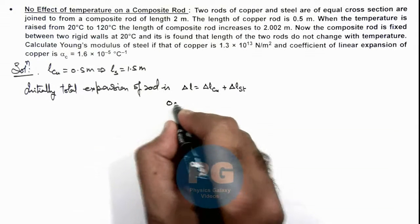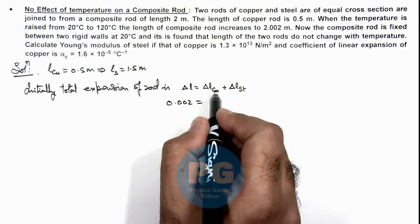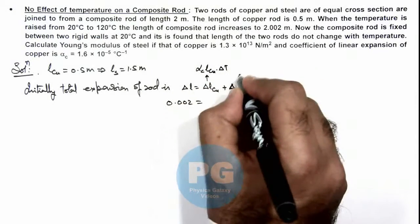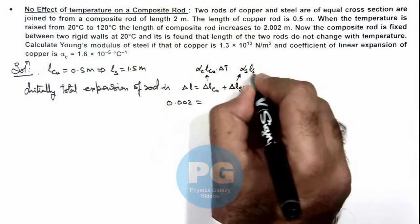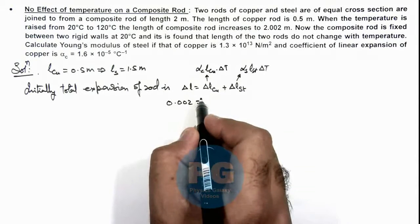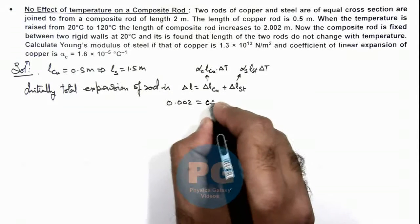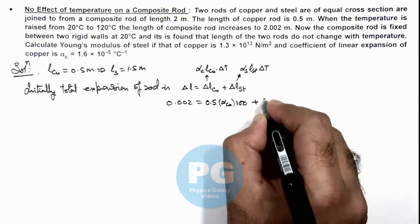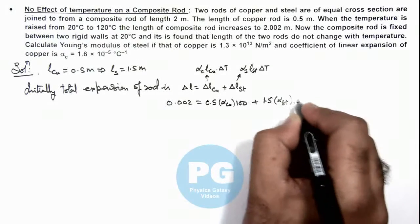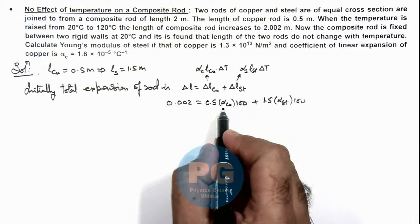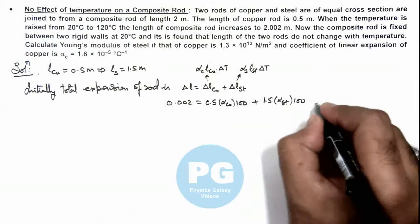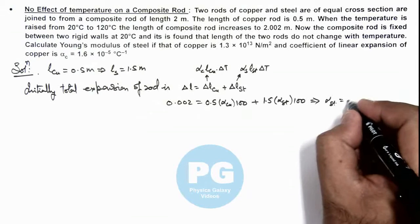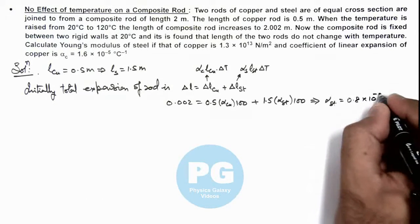So 0.002 = α_copper × L_copper × ΔT + α_steel × L_steel × ΔT. Substituting: 0.002 = (0.5 × α_copper × 100) + (1.5 × α_steel × 100). Substituting the given value of α_copper and solving numerically, we get the value of α_steel as 0.8 × 10⁻⁵ per degree centigrade.